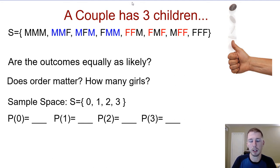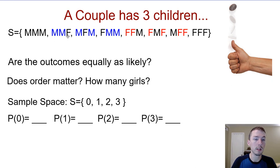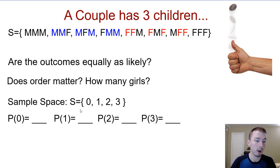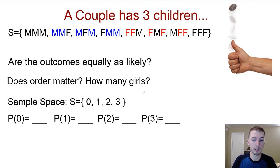We'll also look at the binomial expansion and Pascal's triangle. Are the outcomes equally likely? Each one of these outcomes has the same probability of 1/8. But if we ask what's the probability of having at least one of each — not all male, not all female — that would be 6/8. Or the probability of having only one girl would be 3/8. If the order doesn't matter and we just ask how many girls they had, the sample space is zero, one, two, or three girls, with probabilities of 1/8, 3/8, 3/8, and 1/8 respectively.